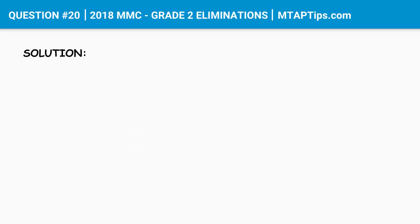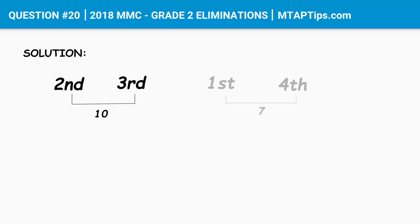We're not sure yet how many bananas each monkey ate. But we know that the second and third monkey ate a total of 10 bananas. And with the first and fourth monkey, they ate a total of 7 bananas.